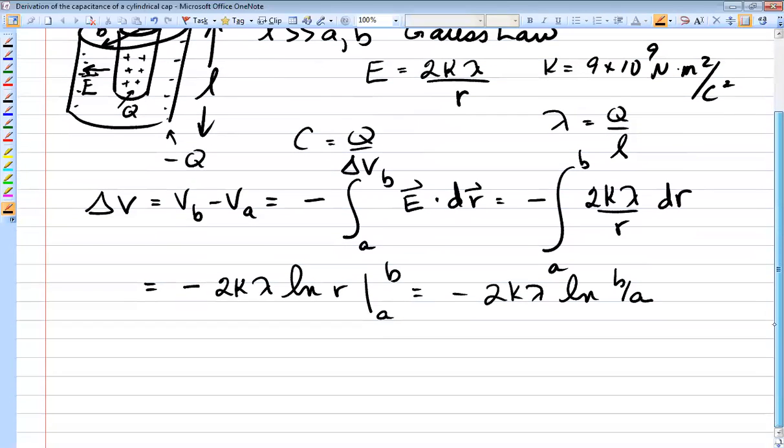It is a negative potential difference because the outer surface is at a lower voltage than the inner surface. But that doesn't matter for the purposes of the definition of capacitance.